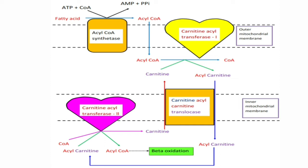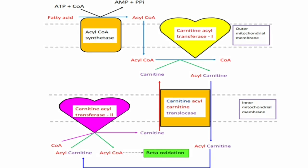The acyl group can cross the inner mitochondrial membrane only when bound to carnitine. The formation of acyl carnitine is catalyzed by an enzyme called carnitine acyl transferase 1, or CAT1. Since the major fatty acid is palmitoyl CoA, this enzyme is also called carnitine palmitoyl transferase 1, or CPT1. The acyl carnitine formed in the intermembrane space is then transported into the mitochondrial matrix by an enzyme called translocase. For beta oxidation, acyl CoA must be regenerated from acyl carnitine.